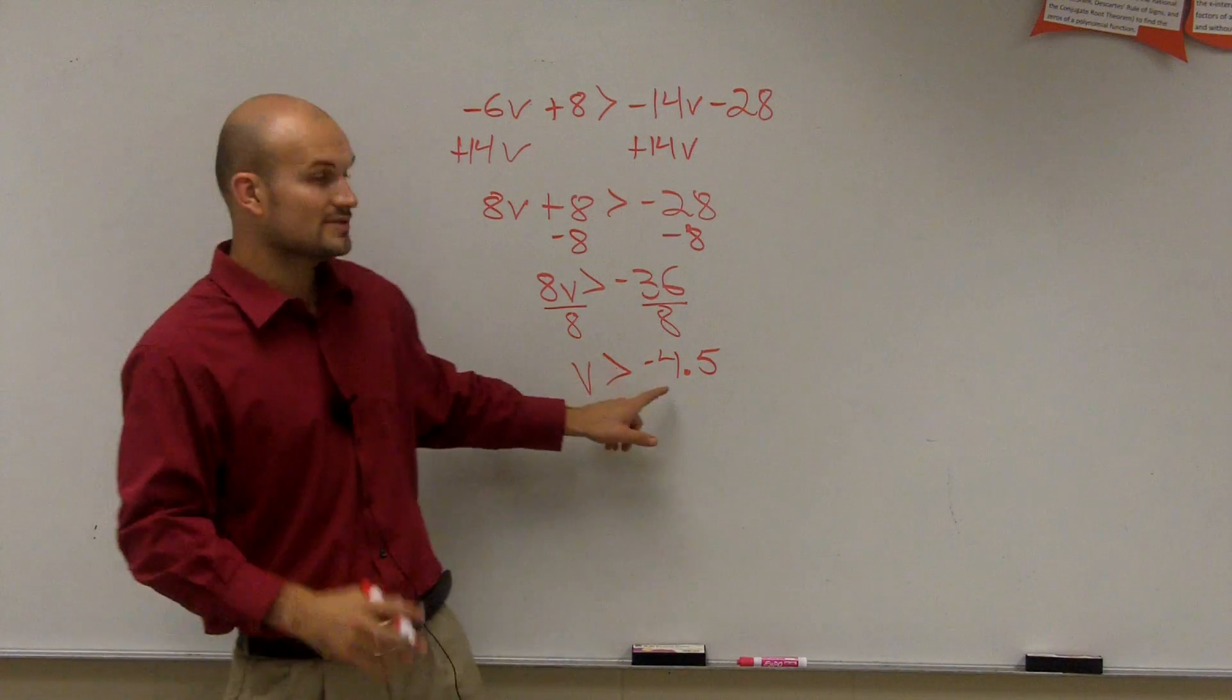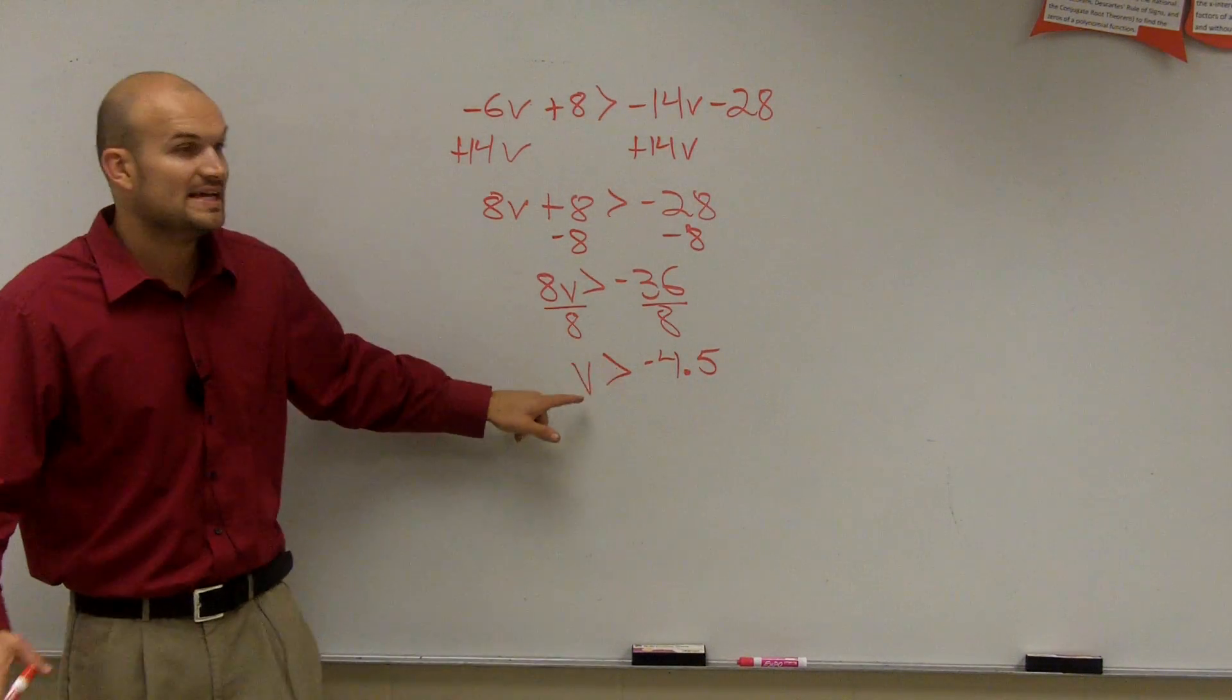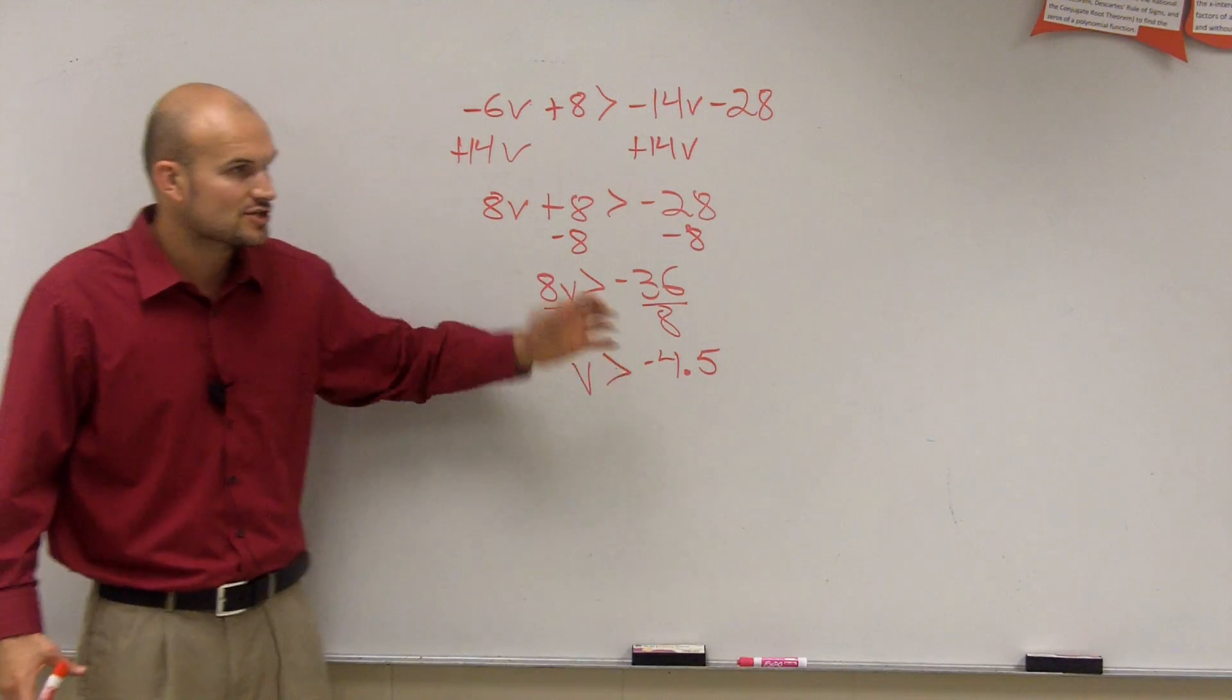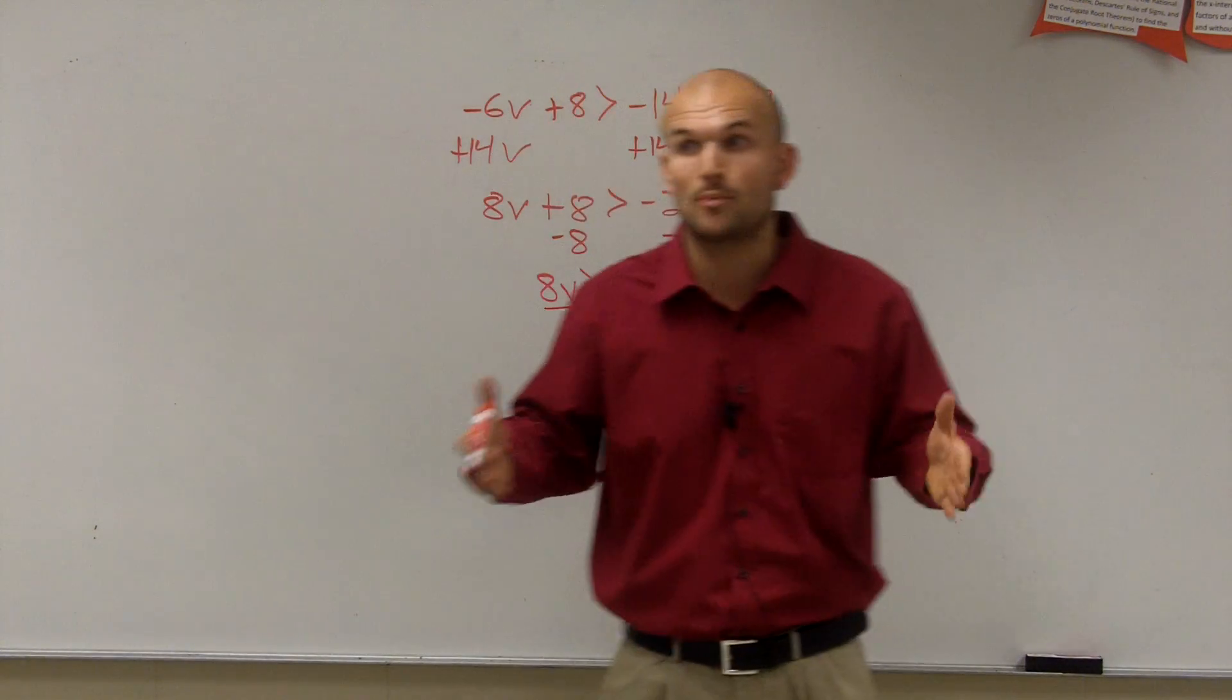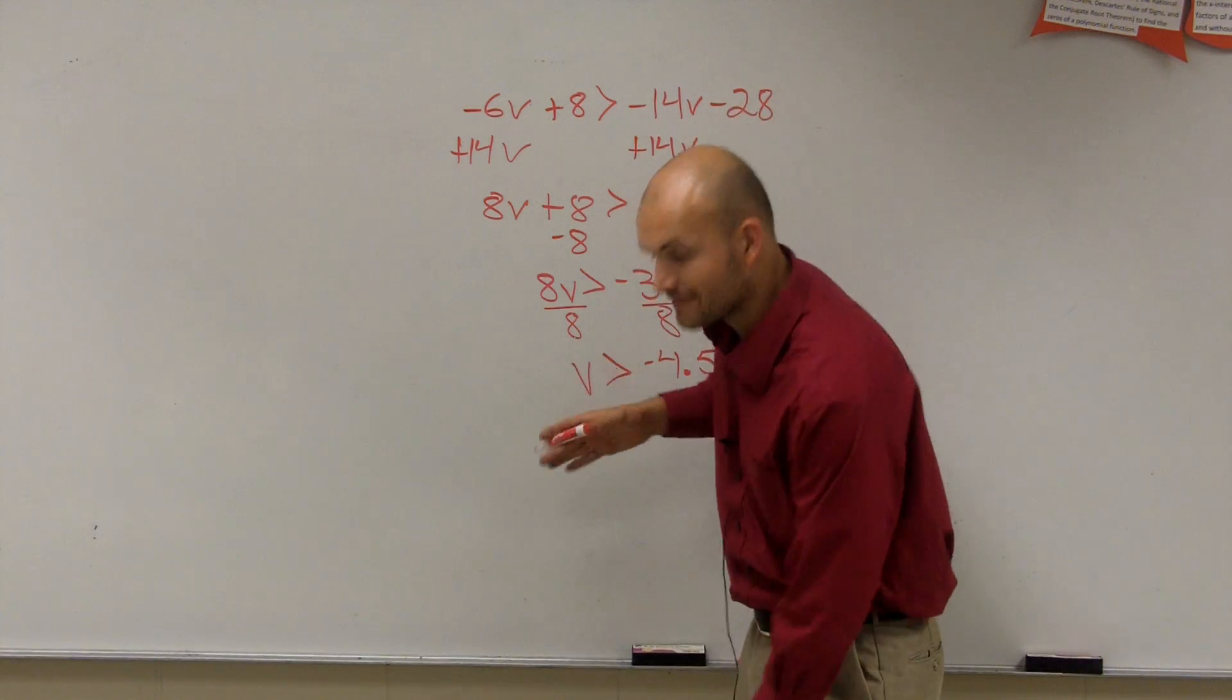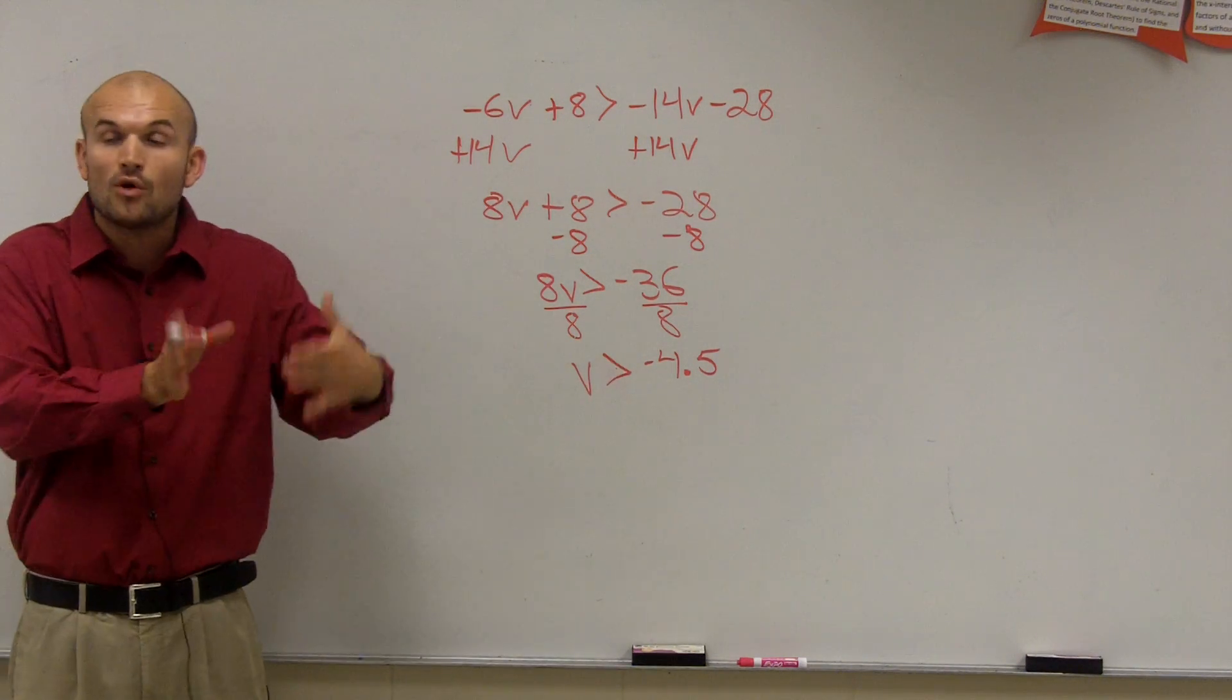Got it? You can check it in your calculator if you want. So now, the next thing we need to do, guys, remember, we need to listen to, we need to say out loud the solution set. V is greater than negative 4.5. So what are all the, is there just one, it's not v is equal to negative 4.5. It's v is greater than negative 4.5. So negative 4.5 is your, so any values of v that are greater than negative 4.5 are going to make this true. So there's more than one solution.